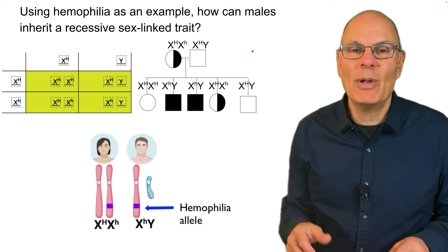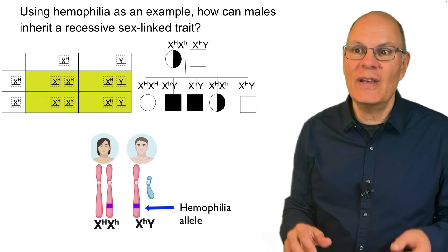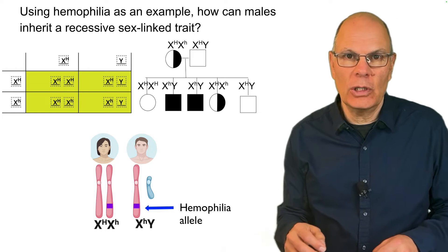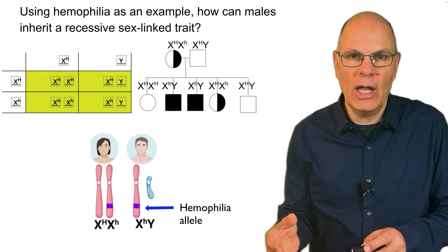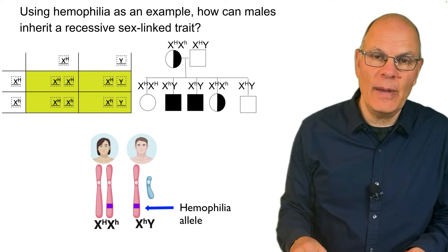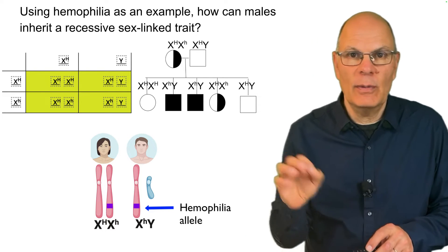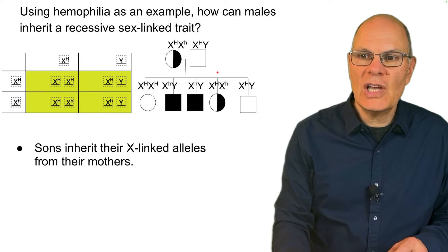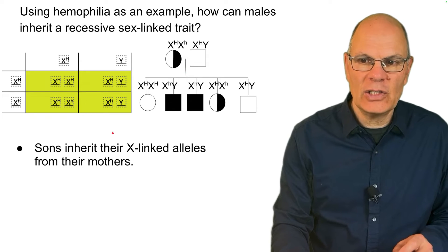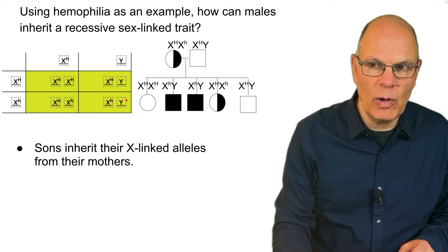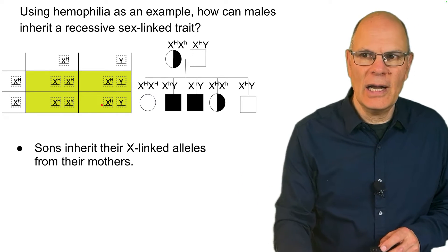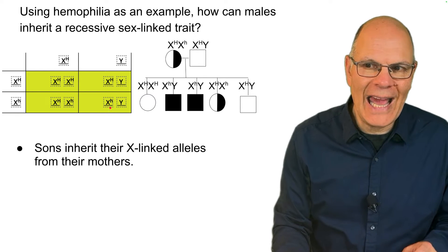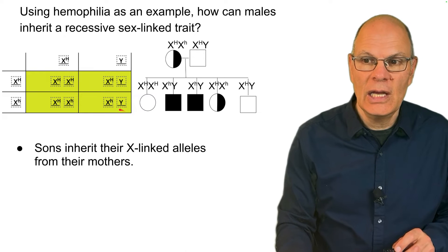Using hemophilia as an example, how can males inherit a recessive sex-linked trait? Hemophilia is a blood clotting disorder — hemophiliacs can't clot their blood. It's much more common in males than in females because the mutated allele that leads to ineffective blood clotting is on the X chromosome. Sons inherit their X-linked alleles from their mothers. This Punnett square is from learn-biology.com, and here we have a hemophiliac: X little h, Y — a recessive X-linked condition.